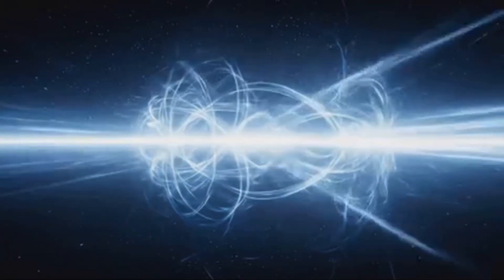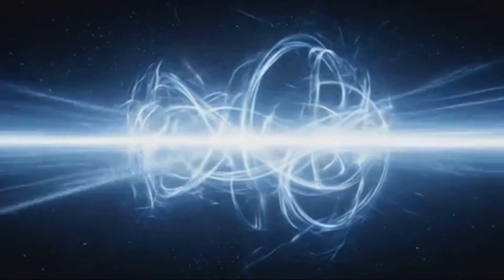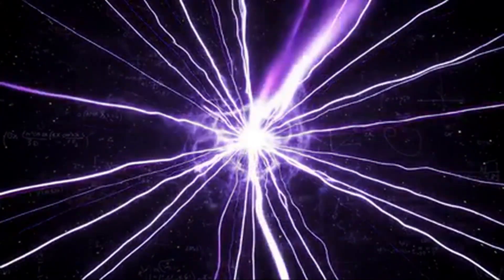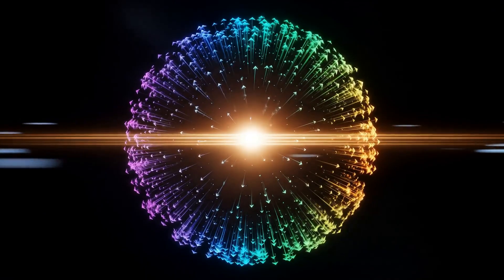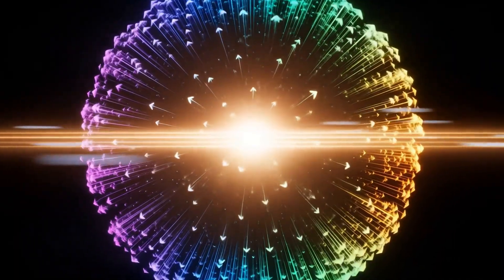This inner field of spinning light is the geometric source of everything. It is the derivative layer of the universe, containing every possible direction a vector can point, every possible frequency it can rotate at.